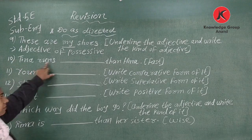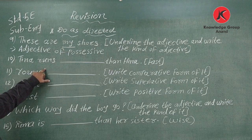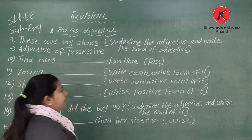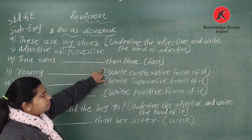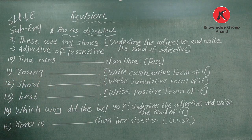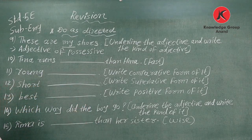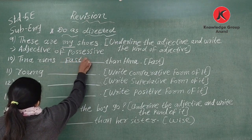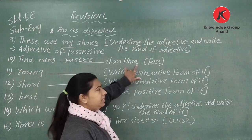Number ten: 'Tina runs ___ than Hina.' Bracket says 'fast.' Since blank comes before 'than,' we use comparative degree. 'Fast' comparative form is 'faster' — F-A-S-T-E-R. So Tina runs faster than Hina.